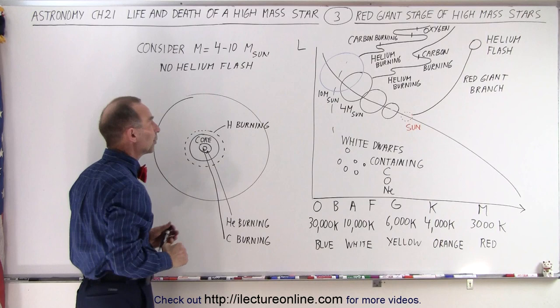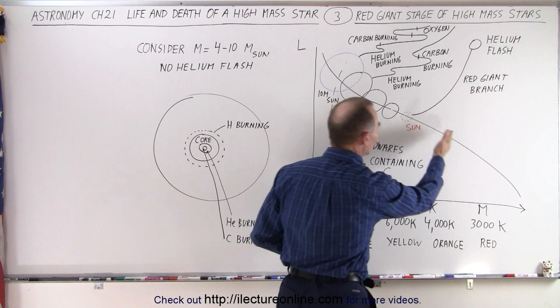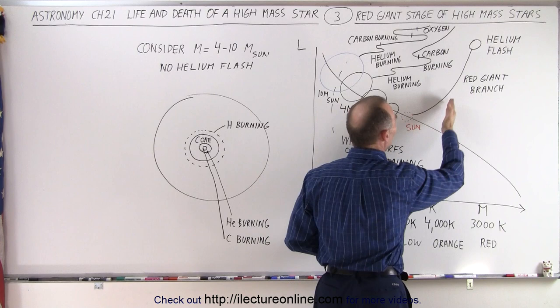Maybe 1 out of 1,000 to 1 out of 5,000 stars would fall in that category where they would have 4 to 10 times the mass of the sun. So remember that stars the mass of the sun are smaller. Once they finish burning up all their hydrogen into helium,